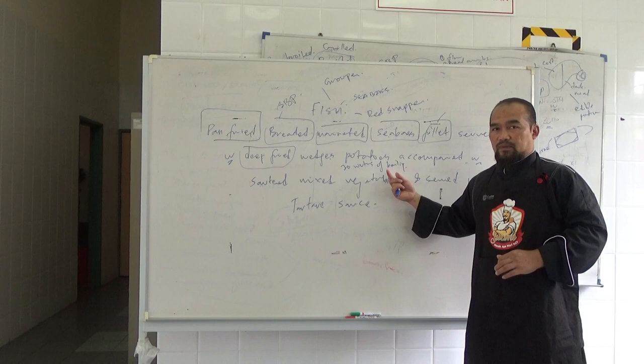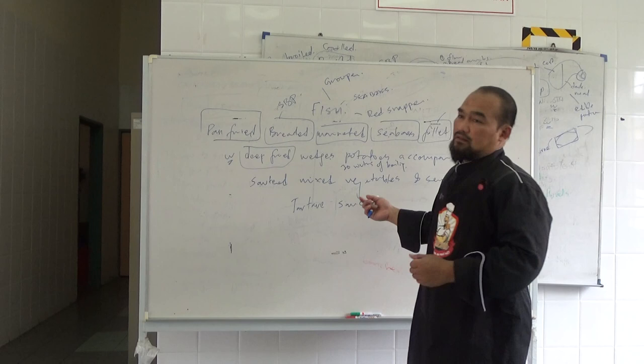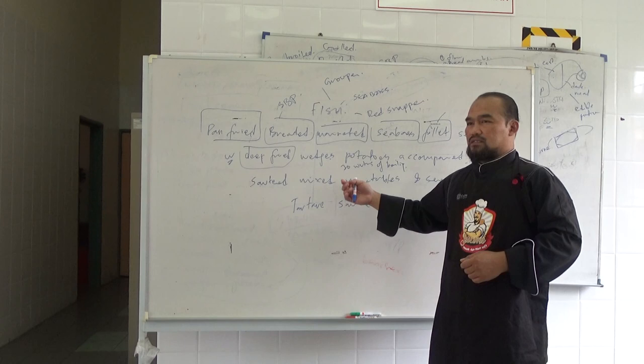Okay, and then we are going to fry it. And then complete it with sautéed mixed vegetables as usual. Okay, you cut into florets of cauliflower, cut into florets of broccoli, cut into batonnet of carrots.